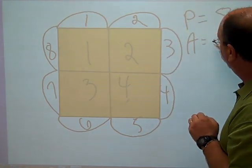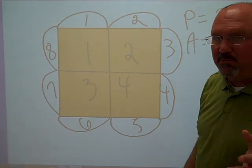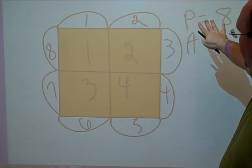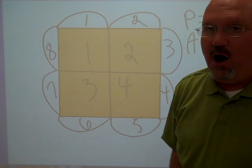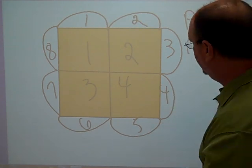One, two, three, four, so area is four. In this particular problem, this figure has a perimeter of eight and an area of four. That's okay. Perimeter and area often don't match up. Sometimes they do.